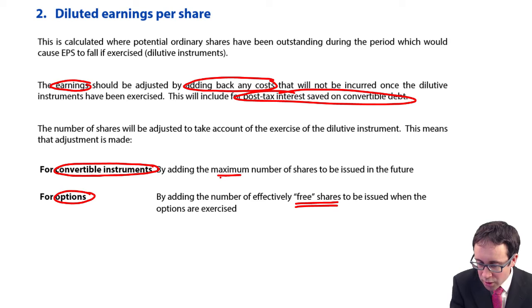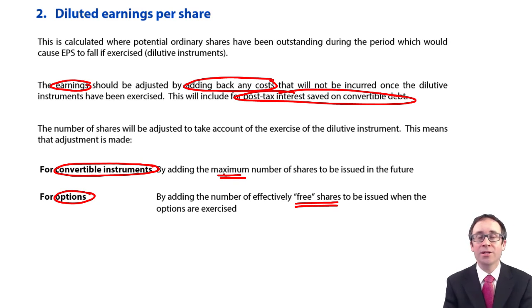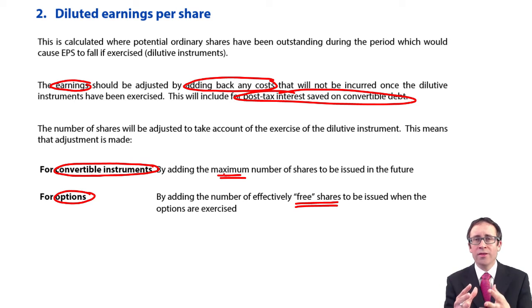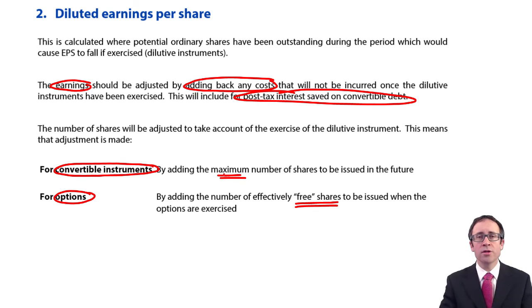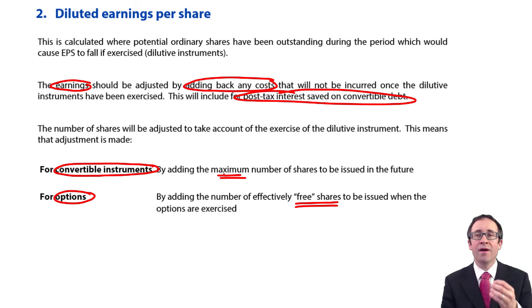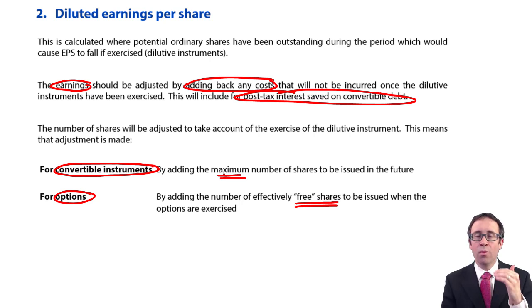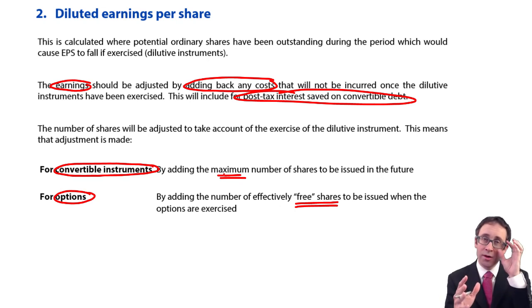For the convertibles, if there are choices as to the conversion terms, we work it out in terms of the maximum number of shares that will be converted — looking at a worst-case scenario. So to summarise: for your diluted EPS, with convertibles you need to look at the post-tax interest saved and the maximum number of shares that can be issued under the instrument. With your options, you need to add into your weighted average number of shares the number of free shares issued as part of the option. We'll work through an example in the next video.